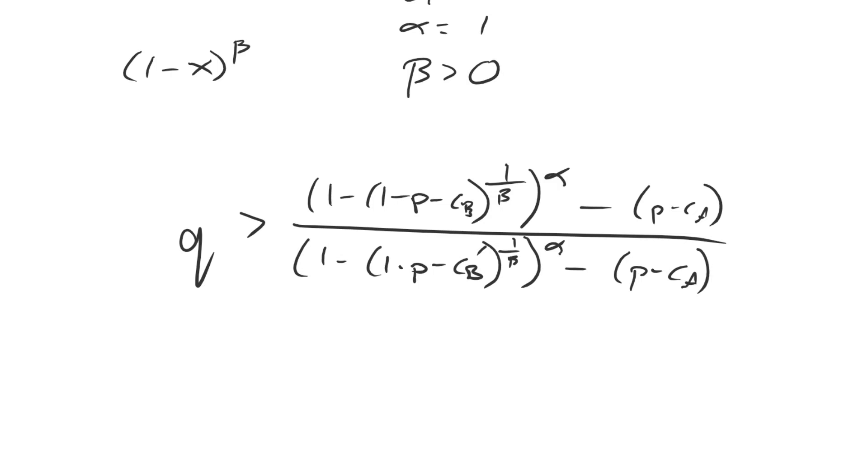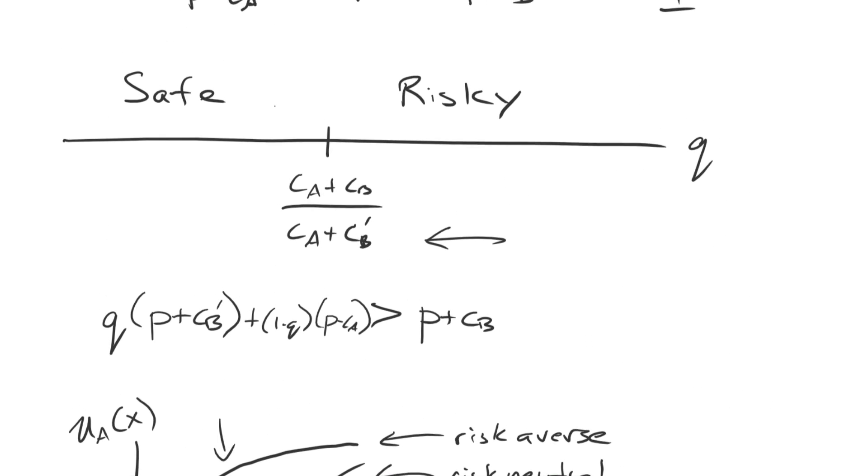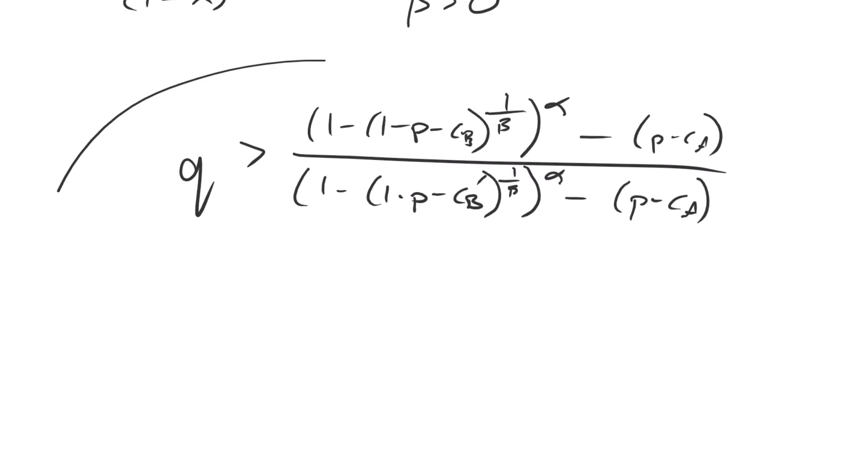So now you can clearly see that this is a function of the probability of victory. That neutrality result completely went away, and the reason is that, again, we calculated this particular cut point using this inequality here, and when we have this inequality, all of the P's nicely cancel out, but once we start getting values raised to exponents, those P's don't very simply cancel, and we're instead left with this giant mess here.